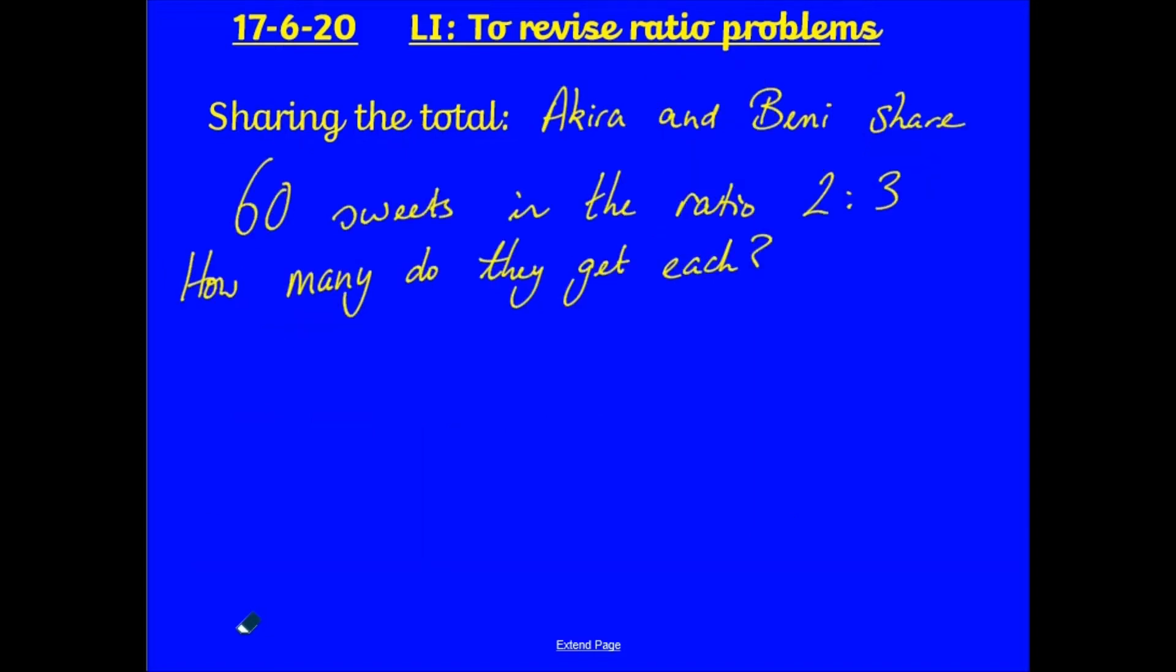That's simplifying done. Let's have a look at sharing the total. So, this is if I've got a total amount, and I need to share it into a ratio. So, the question I've got here is, Akira and Benny share 60 sweets in the ratio of 2 to 3. How many do they get each? I could go, right, Akira gets 2, Benny gets 3, that's 5. Akira gets another 2, that's 4. Benny gets another 3, that's 6, that's 10 in total. And I can keep going until I get to 60. But, when I'm working with big numbers, that's going to become quite problematic quite quickly. So, I need to use my maths to help me.